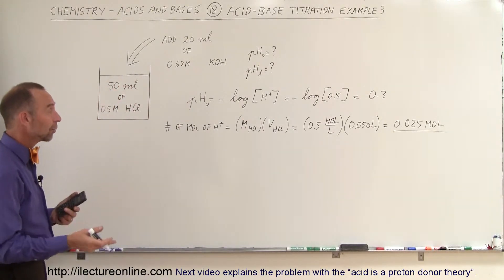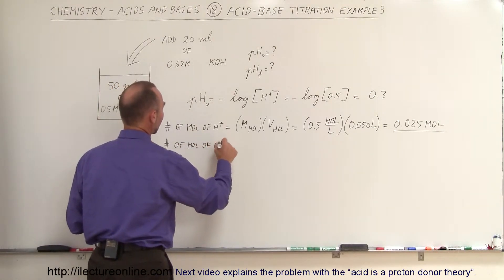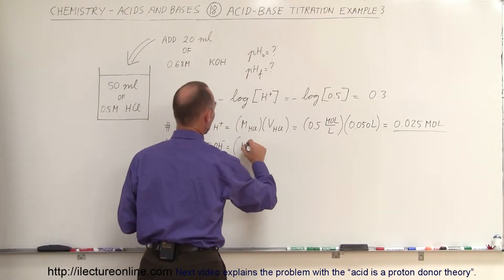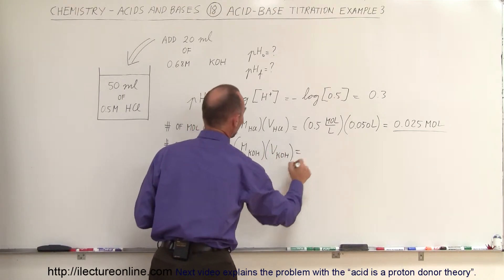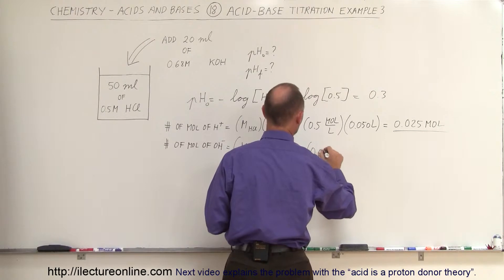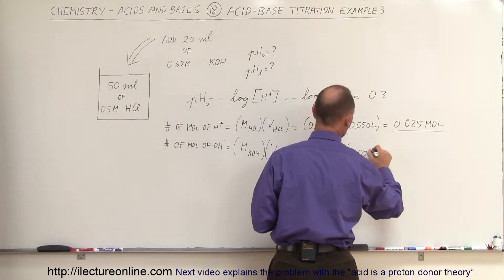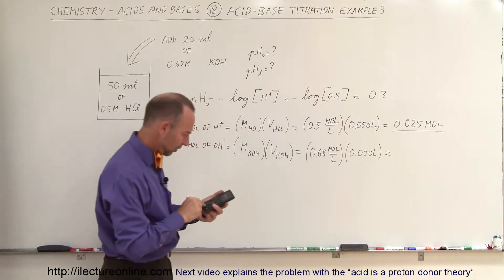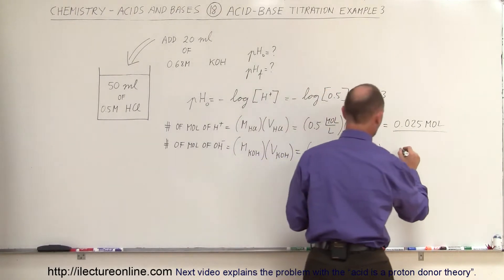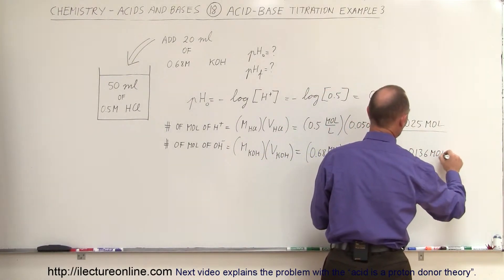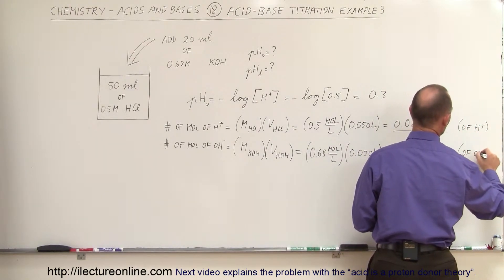Now, how many moles of hydroxide ions are we adding? The number of moles of hydroxide ions equals the molarity of potassium hydroxide times its volume. That's 0.68 moles per liter times 0.02 liters, which equals 0.0136 moles of hydroxide ions.